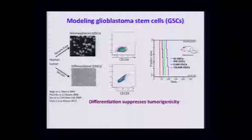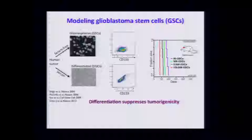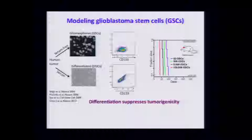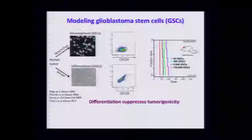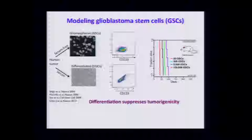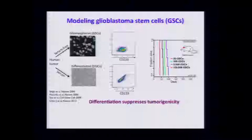These are tumor-initiating and tumor-propagating cells. You can take the same human tumor and expand cells in serum — these grow as a conventional cell line. These cells don't express CD133, and you can put hundreds of thousands or millions of them into a mouse and they won't do anything. The mouse is just fine. So these cells won't propagate tumors and they lack stem-like characteristics.